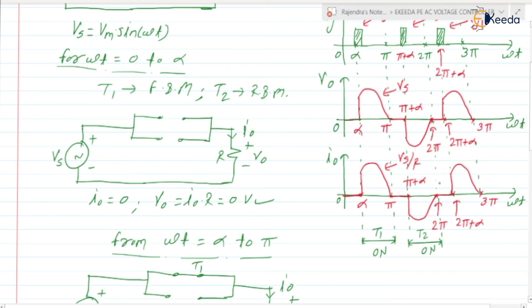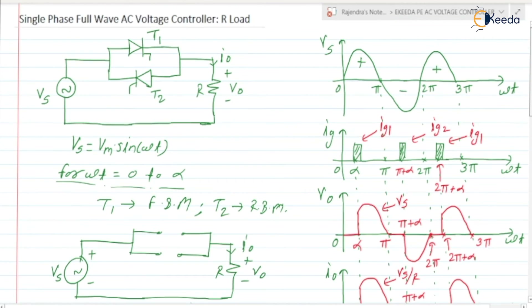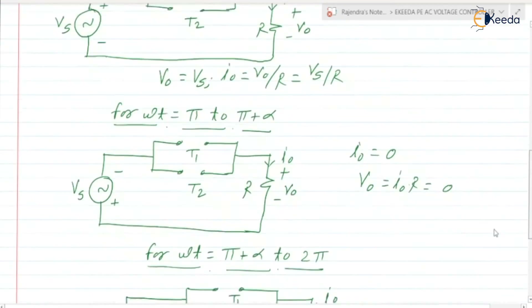After 2π the same cycle repeats. Corresponding to the positive half cycle, in the output we are getting a controlled pulse — if we vary α, the area under this pulse varies, meaning we can vary the positive half cycle output. Similarly, corresponding to the negative half cycle, thyristor T2 turns on, and we can vary the firing angle α for T2 to vary the output voltage magnitude for the negative half cycle. Both are controlled pulses, that's why it is known as full-wave.